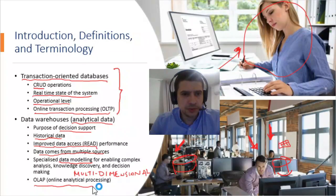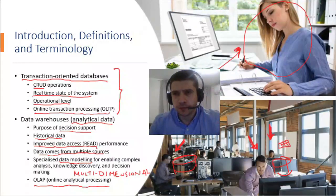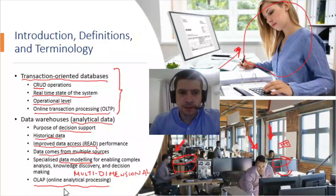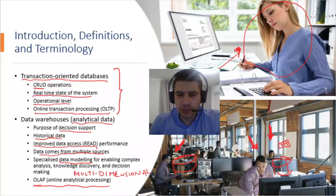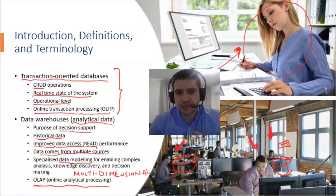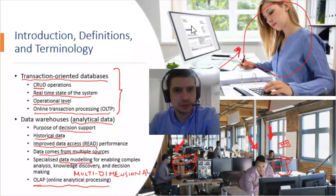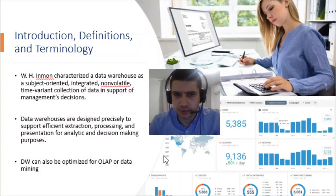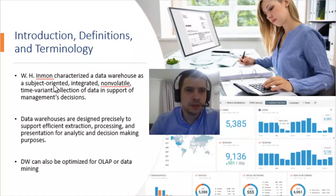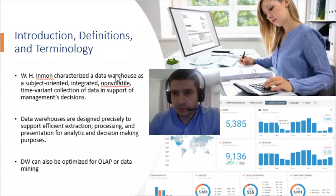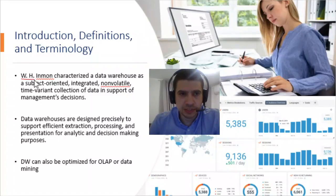Data warehousing also allows OLAP tools for accessing this data. OLAP stands for Online Analytical Processing — a term used to describe the analysis of complex data in the data warehouse. These tools enable managers to create dashboards easily. So far we've described what a data warehouse looks like. A specialist in this field, W.H. Inmon, characterized a data warehouse as a subject-oriented, integrated, non-volatile, time-variant collection of data in support of management decisions.